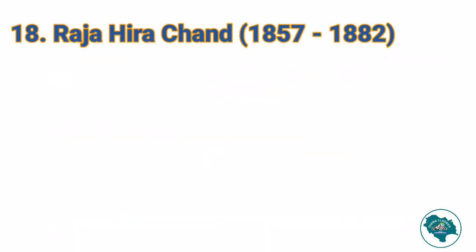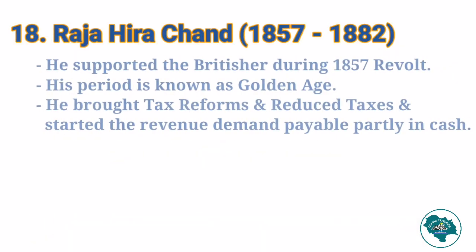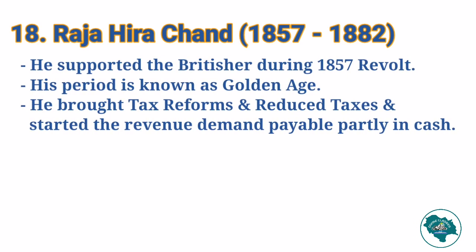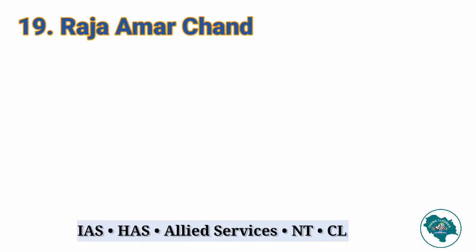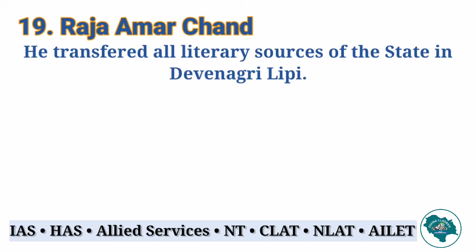Then came Raja Hirachand, who supported the Britishers during the 1857 revolt. His period is known as the Golden Age. He brought tax reforms, reduced taxes, and started revenue demand payable partly in cash in certain areas of the state. In 1882, he paid a visit to Shimla with his son Tikka Amarchand. He developed some illness on the way and died at Mahal. After him came Amarchand, who transferred all the literary sources of the state into Devanagari script.